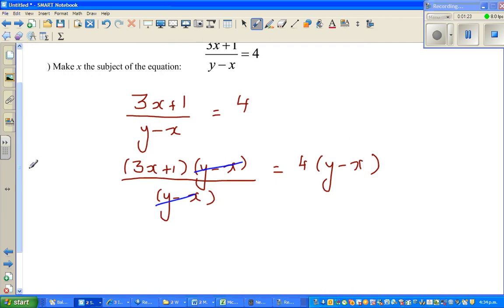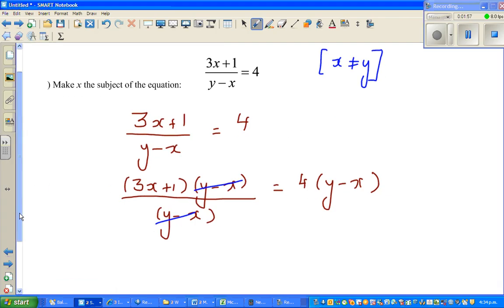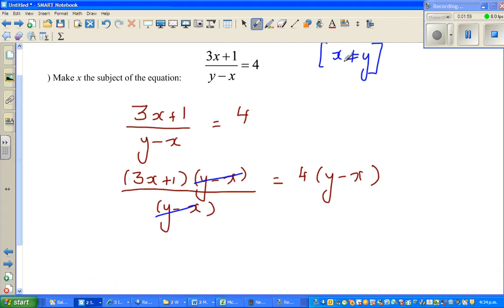One thing that should be given here is x is not equal to y, or y is not equal to x, because you can't cancel if x and y are equal. You can only cancel when it's not zero - in other words, the denominator cannot be zero. If x equals y, y minus x will become zero. So we are accepting here, it is understood that y is not equal to x.